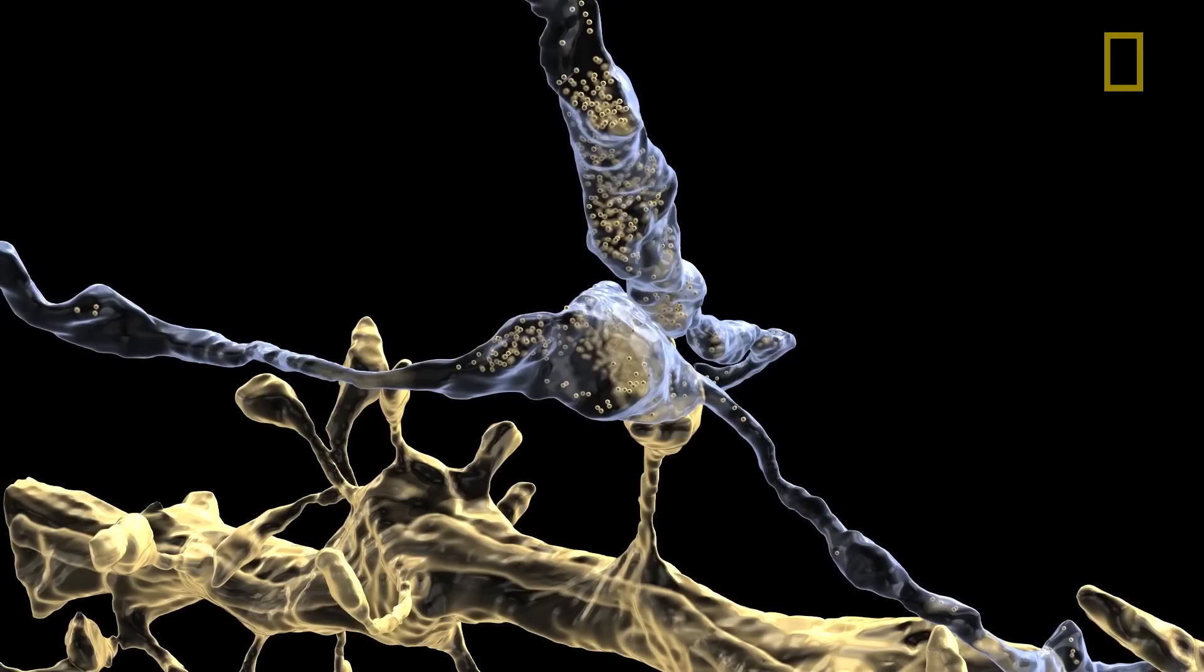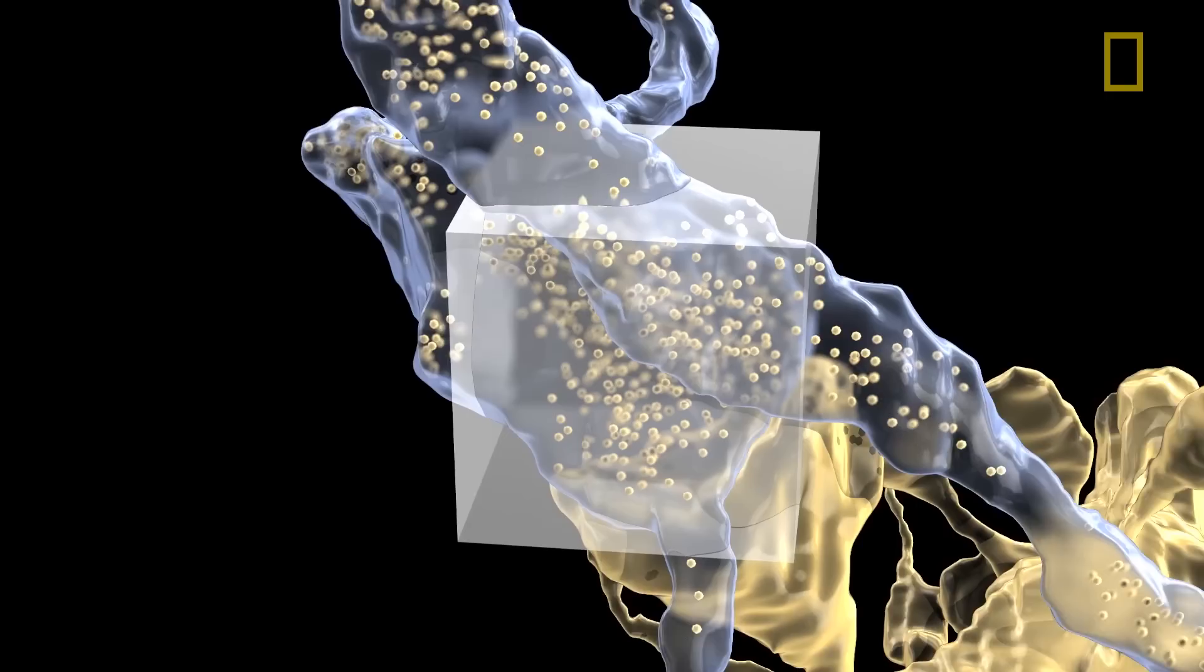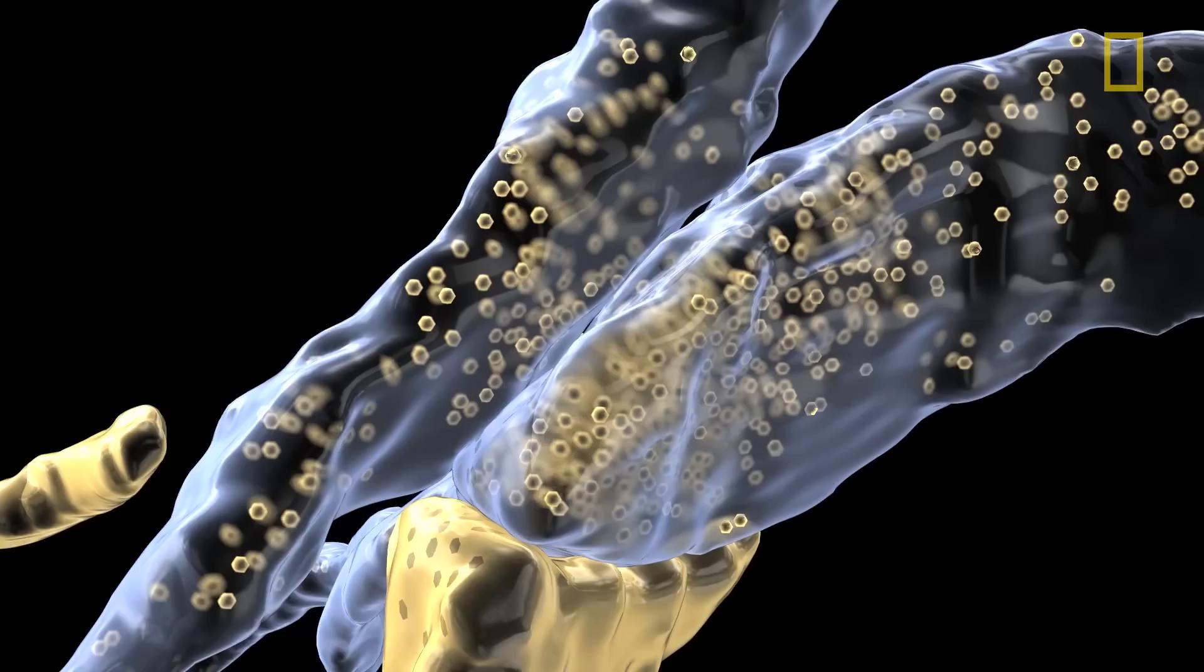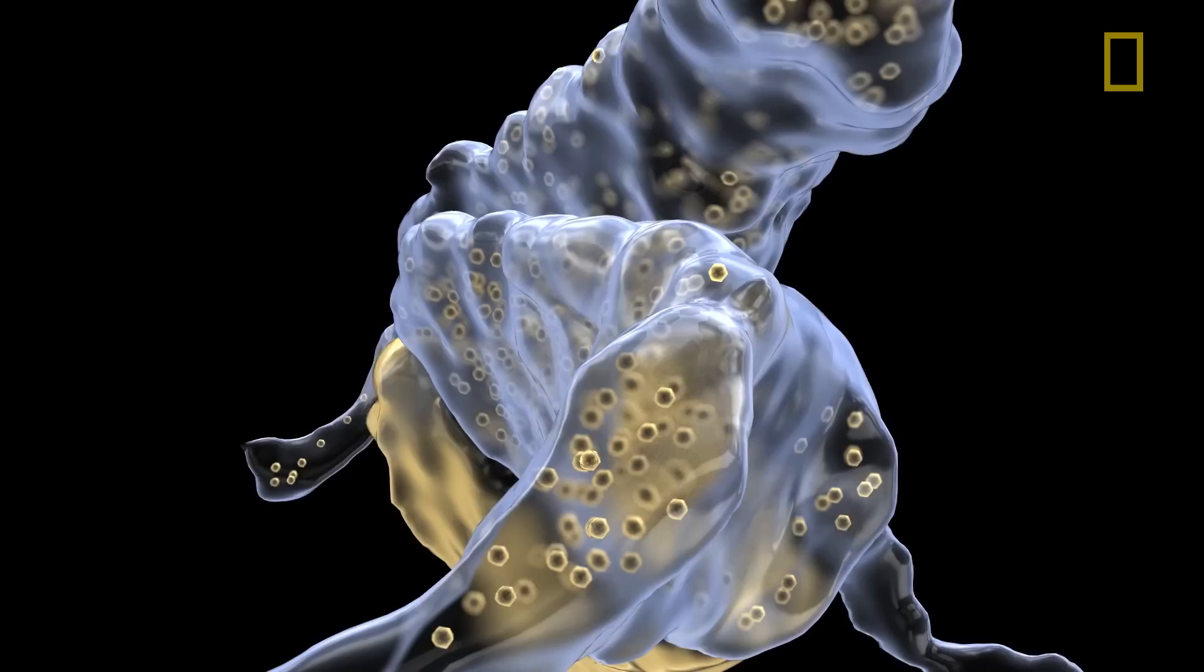Synapses are where axons of some neurons are making connections with the dendrites of other cells. And the way axons tell dendrites things is by releasing neurotransmitter packets that have hundreds or thousands of neurotransmitter molecules. These little packets are called synaptic vesicles and they're labeled here as little yellow spheres.